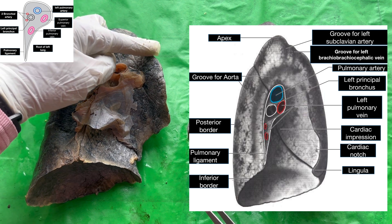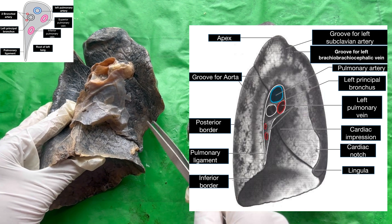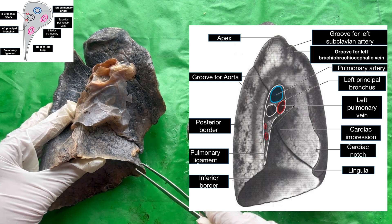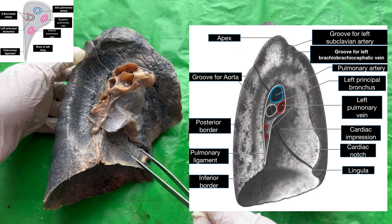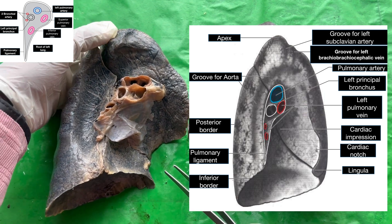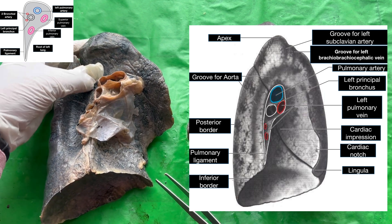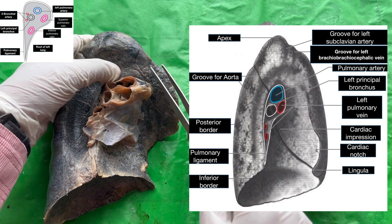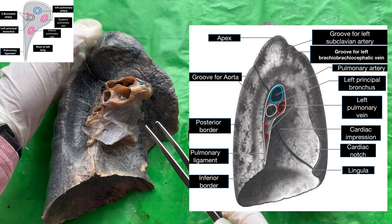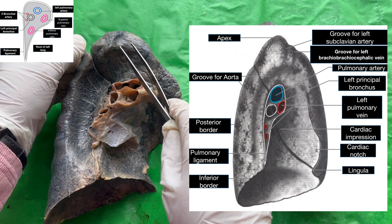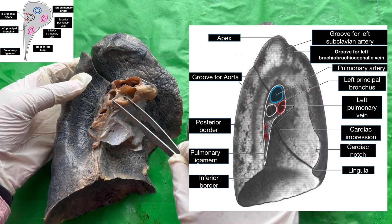Now let's know the impressions and contents of the root of the left lung. The anterior border has the cardiac notch, and just below the cardiac notch is a tongue-shaped projection known as the lingula of the left lung. The groove with my thumb is for the left subclavian artery, and just below is the huge groove for the arch of the aorta. The groove shown here is for the left brachiocephalic vein. This area is for the cardiac impressions.